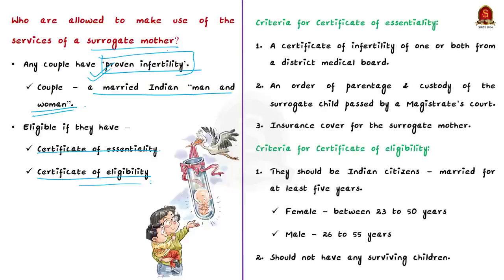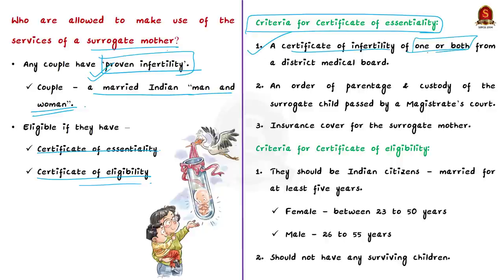The certificate of essentiality is issued if the couple fulfills three conditions: first, a certificate of infertility of one or both from a district medical board; second, an order of parentage and custody of the surrogate child passed by a magistrate court; and third, an insurance cover for the surrogate mother.